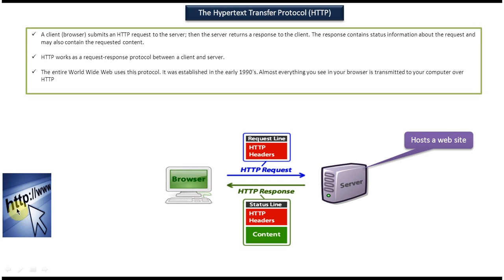So here you can see HTTP. As mentioned, most website URLs start with hypertext transfer protocol. Using this protocol, communication between the client and server happens. Here you can see the client machine which has a browser, and here you can see the server — the machine which hosts the website. The browser sends the HTTP request to the server.